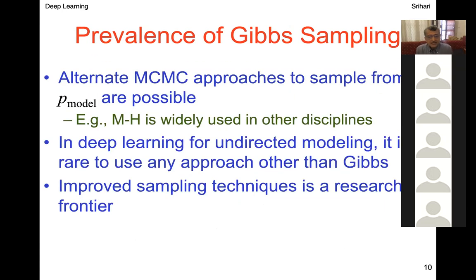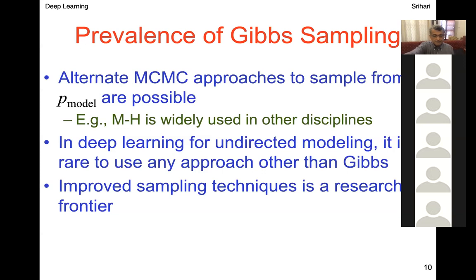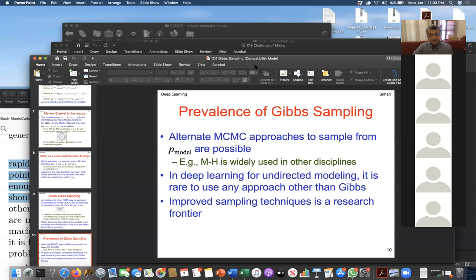The prevalence of Gibbs sampling: there are alternate MCMC approaches, and Metropolis-Hastings is widely used in other disciplines. But for deep learning and capturing probability distributions using undirected models, it is rare to use any approach other than Gibbs. Improved sampling techniques remain a research frontier.